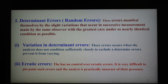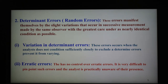The second main type of error is indeterminate error, also known as random error. These errors manifest themselves by slight variations that occur in successive measurements made by the same observer with the greatest care under nearly identical conditions. They are due to causes over which the analyst has no control. These errors are irregular and generally small. The mean value of random error does not distort the result compared to the correct value. For example, variation in room temperature and other environmental factors introduce random errors. These errors can be minimized by careful manipulation and keeping environmental conditions as constant as possible. They are generally of two types: variation in determinate error and erratic error.